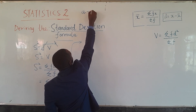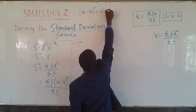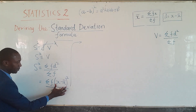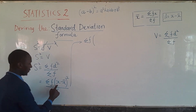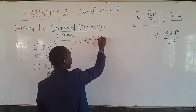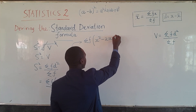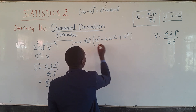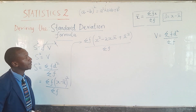Now (x minus x-bar)² is an algebraic identity. Remember that (a minus b)² can be written as a² minus 2ab plus b². Using that identity, we expand what we have in the brackets to get summation of f times (x² minus 2x·x-bar plus x-bar²), all divided by summation of f.